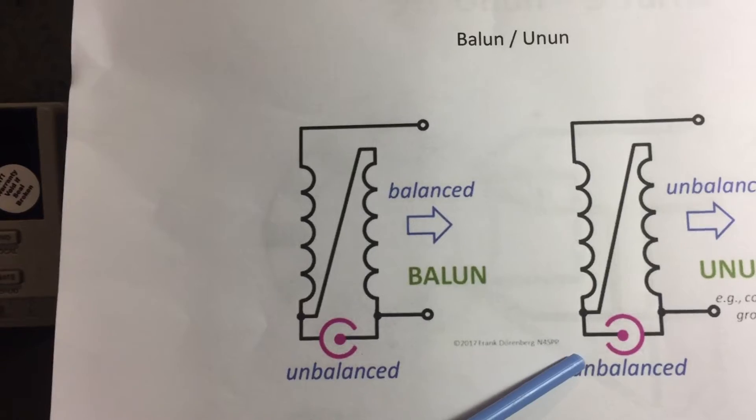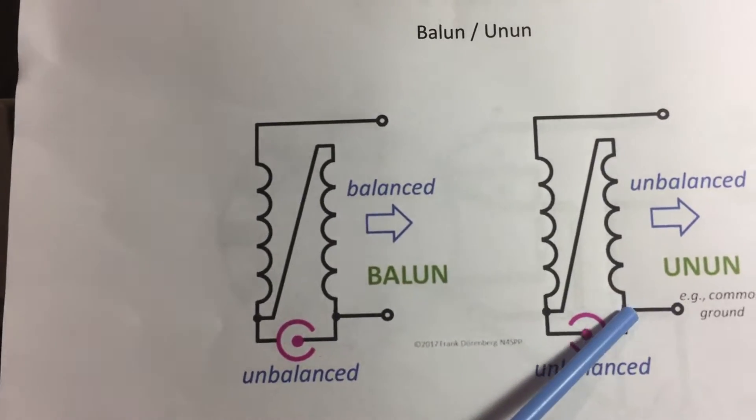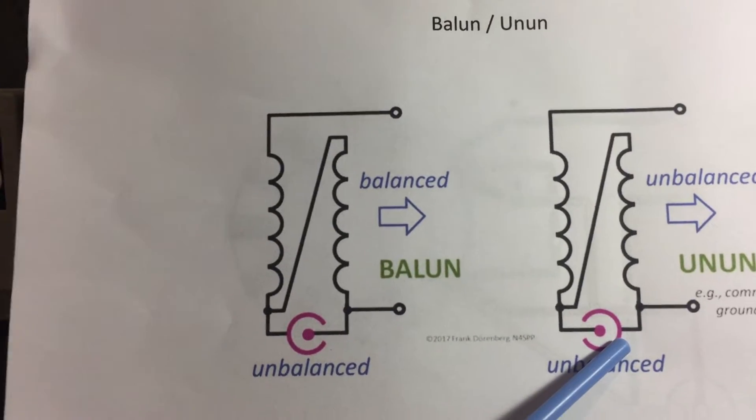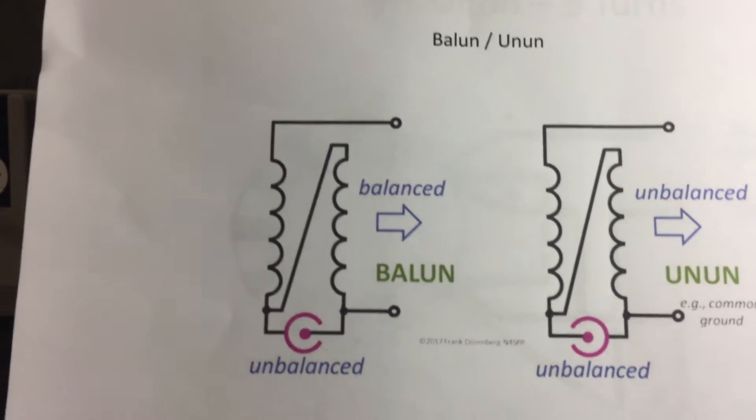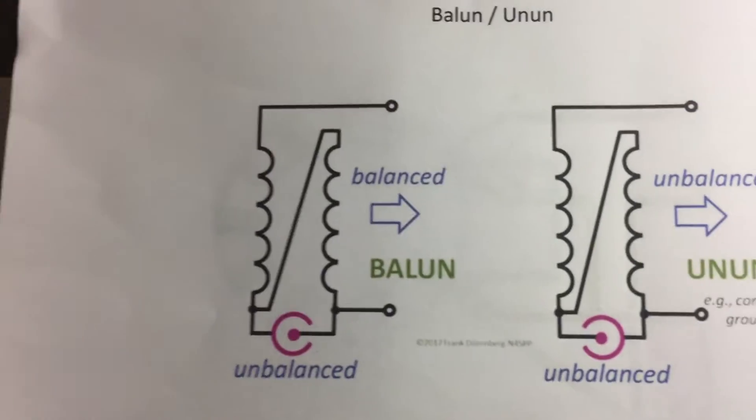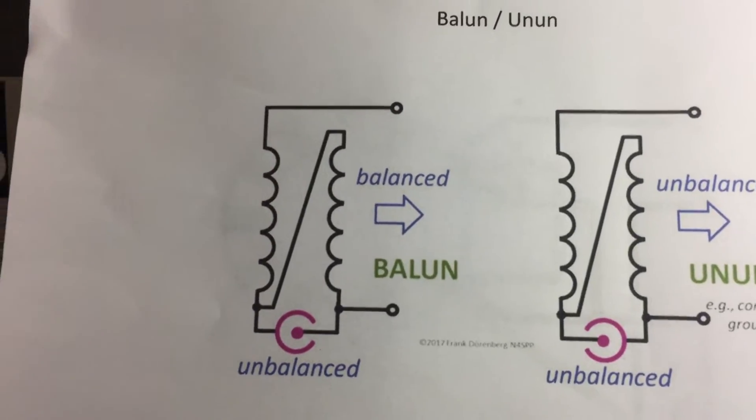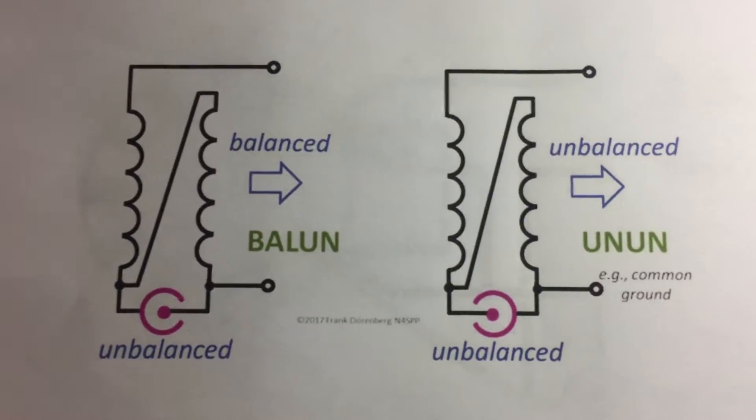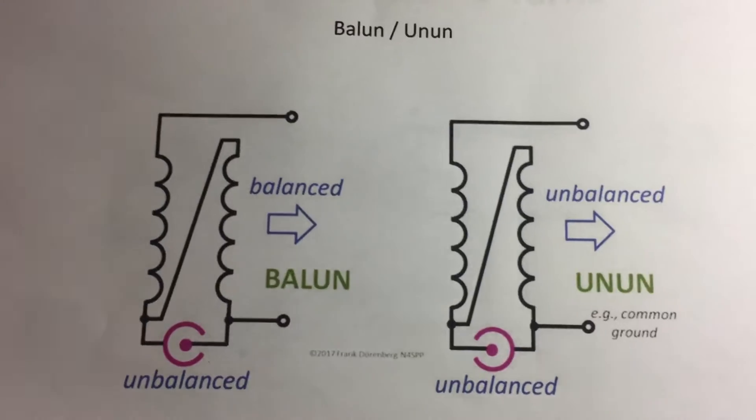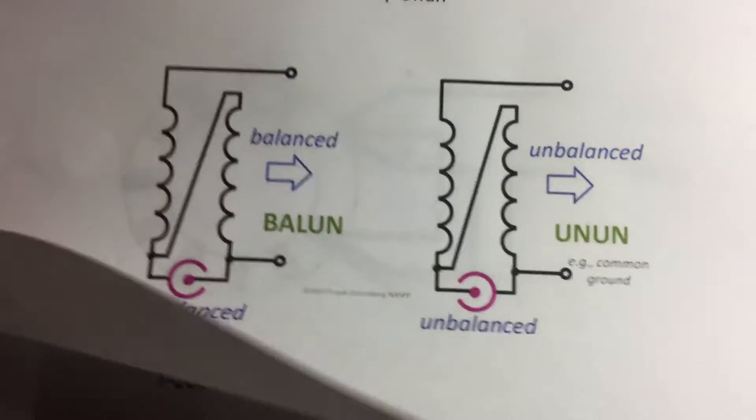Or you might have balanced, which could be a center-fed dipole, to unbalanced, which again is the output from your transceiver. And the only difference here is where the grounding is. You can see the grounding is common here. I'm going to talk a little bit more about this when we get into discussions about the RF choke and the antenna tuner, but I just wanted to cover that briefly and we will discuss it again.